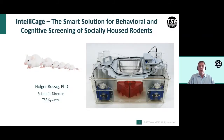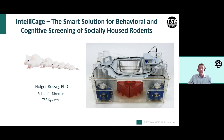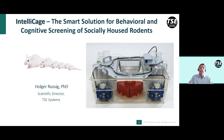Thank you very much for being with us for this introduction of the IntelliCage, which is a fully automated home cage phenotyping system. In the past decades, to model human diseases, a large number of rodent models have been generated, including genetically modified animals. To assess the biological function of these modifications, very sensitive phenotyping tools are required to detect changes in behavior. The IntelliCage is probably a very useful tool for this kind of phenotyping work.